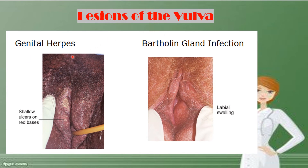Genital herpes presents as shallow ulcers on a red base, pointing to infection from herpes simplex virus 1 or 2. The ulcers may take 2 to 4 weeks to heal. Bartholin gland infection causes include trauma, gonococci, anaerobes like Bacteroides and Peptostreptococci, and Chlamydia trachomatis.